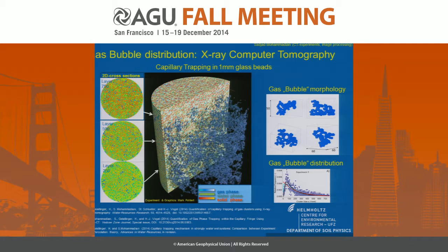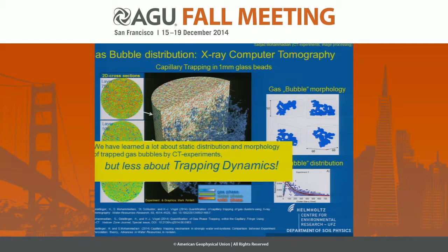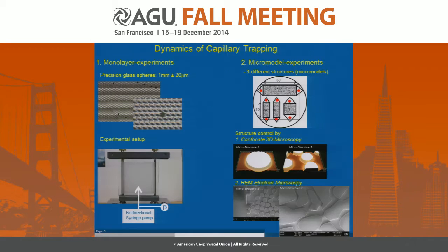This is what we learned about the static distribution, but we learned nothing about trapping dynamics, because we always investigate the static gas phase. Therefore we thought it would be good to study the dynamics of capillary trapping using monolayer experiments and also micromodel experiments.